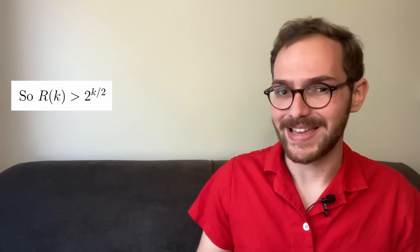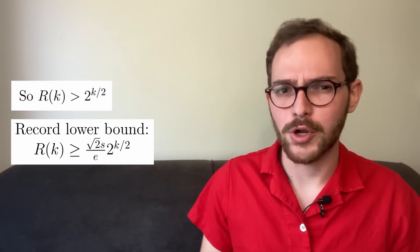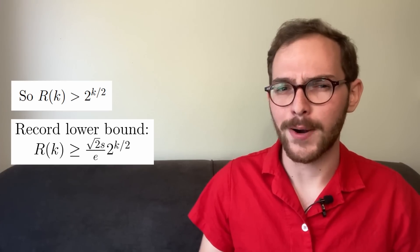Here's what's really amazing about this: the best-known lower bounds for r of k are barely better than this result. This simple argument, while not good enough to save us from the aliens, is practically state-of-the-art. The probabilistic method allows us to take problems that are too hard to find constructive, explicit solutions for and solve them in the realm of probability and the uncertain. It's a powerful technique, and if you're interested in learning more, I'll leave some links in the description.